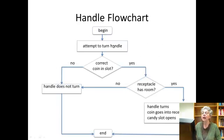So here we're starting and our first event is to attempt to turn the handle. And that's really the only event that we're going to consider having a design for. So the first thing we want to know, is there a correct coin in the slot? So the machine will do its best to determine that. And if there's not, if the slot is empty or there's a bad coin in it, then we don't want it to turn. So the handle does not turn and that's the end of the process.